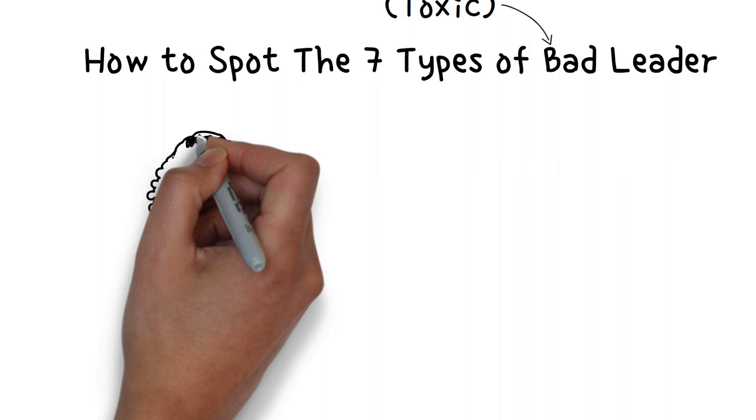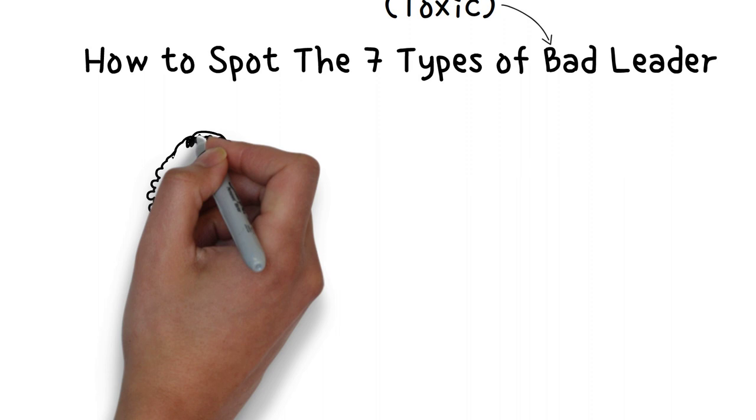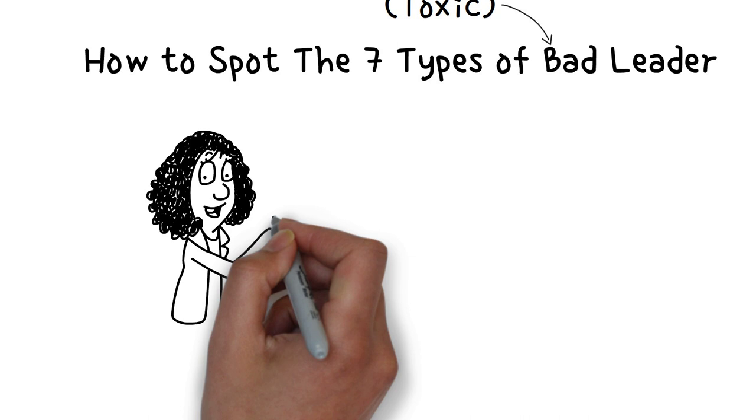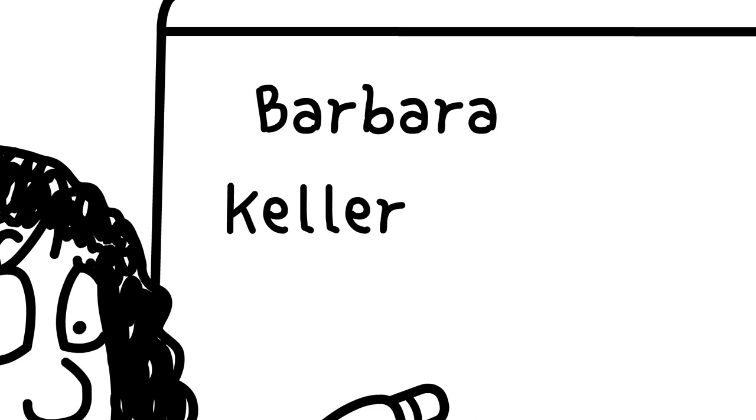Fortunately, researchers have developed various models to identify the traits of bad leaders. For example, Barbara Kellerman conducted a study in 2004 to define the characteristics of bad leaders. Kellerman identified seven traits.